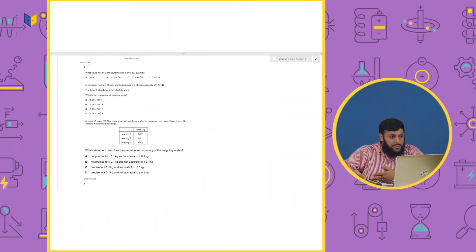So, the year is 22, and the variant is 2, which is the paper 1. The question is, what could not be a measurement of a physical quantity?